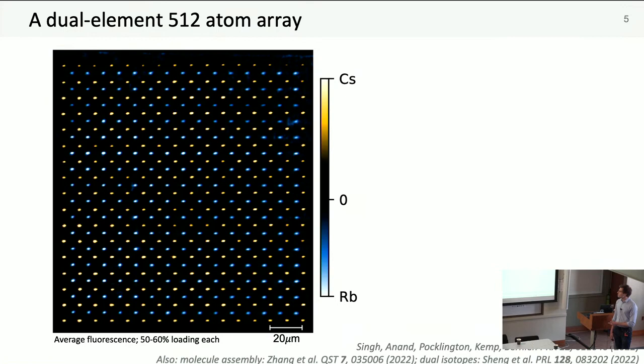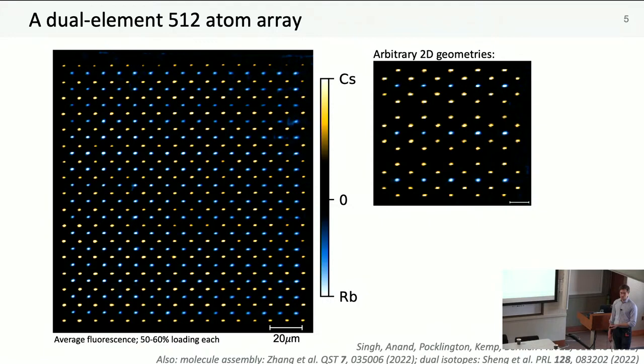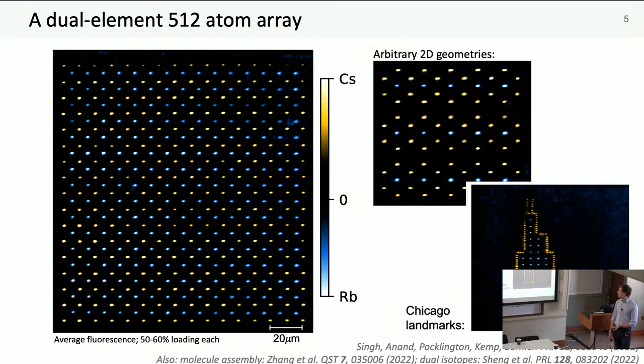Here's an average fluorescence image of a 512 site array. We typically get 50 to 60% loading in each subarray, which basically tells you that the 3D MOTs don't interfere with each other and we get similar performance to a single species setup. You see cesium atoms in yellow and rubidium in blue, and that theme will remain consistent throughout.